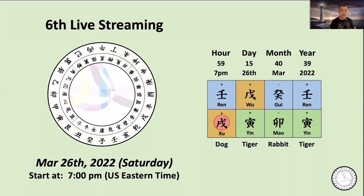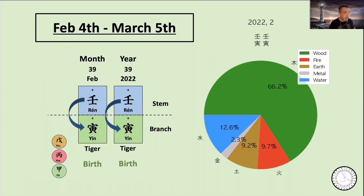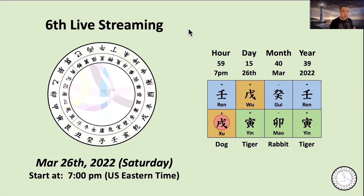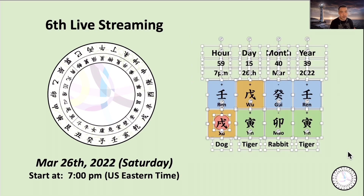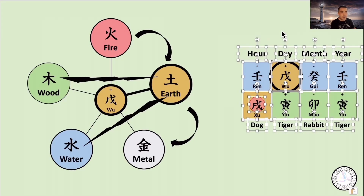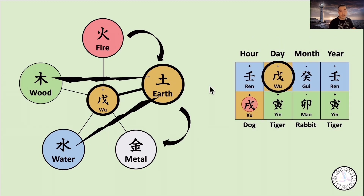Let's start with this energy for today. This is today's energy, and it is also kind of symbolizing this month's energy. A viewer asks: can you add up weighting from the video to determine the dominant energy of your own chart? We do that every week. Since we don't really read personal charts in this live session, let's use today's energy to figure out the dominant energy and what is the Yongshin.